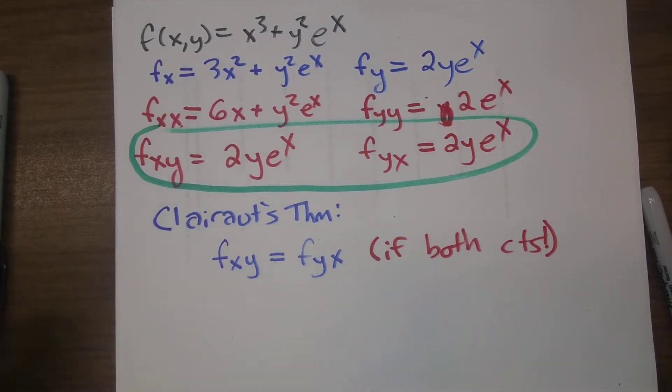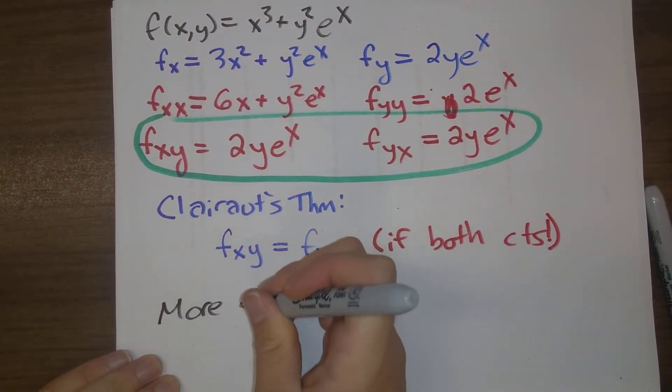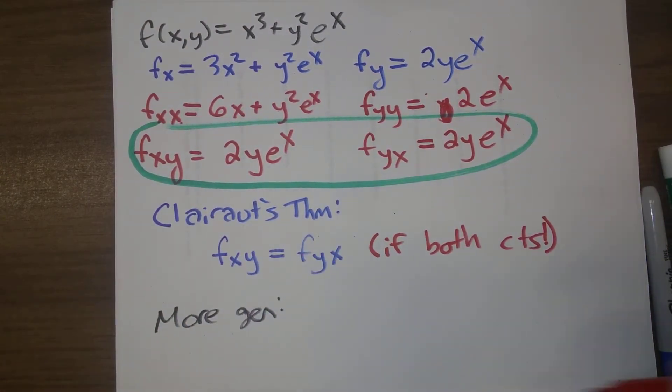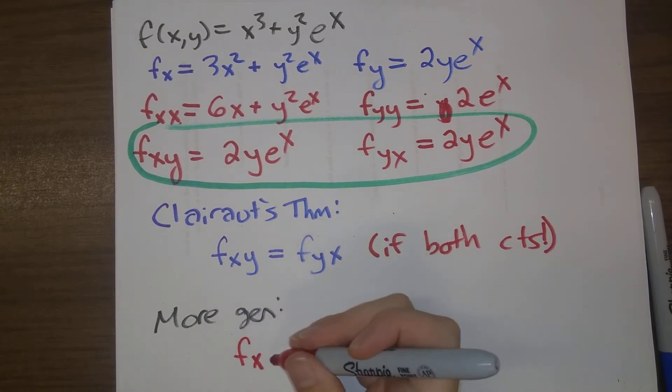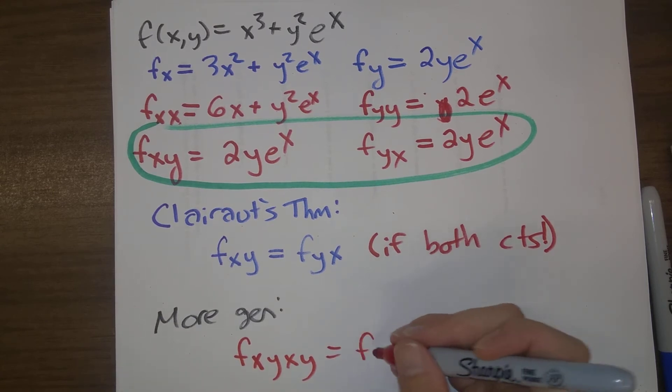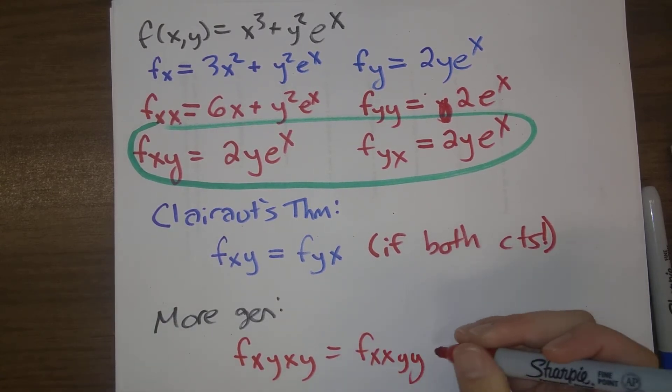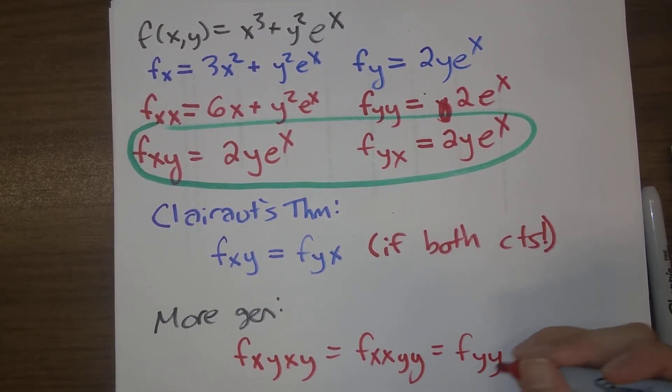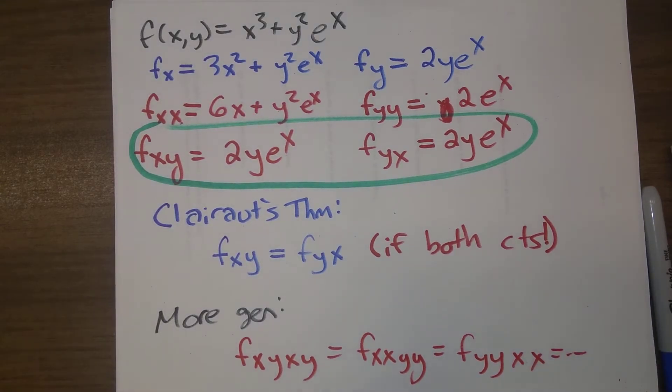This generalizes. So for example, we could have things like f_xyxy. So here we're taking two derivatives with respect to x, two derivatives with respect to y. It wouldn't matter what order we take those in. There's several more combinations, several more orders that you could do there. As long as, once again, if everything in sight is continuous, then life is good.